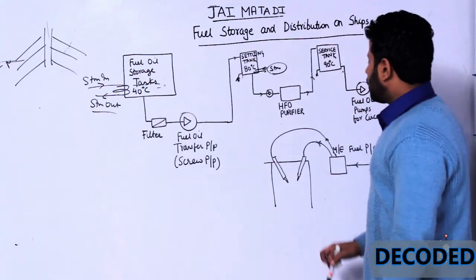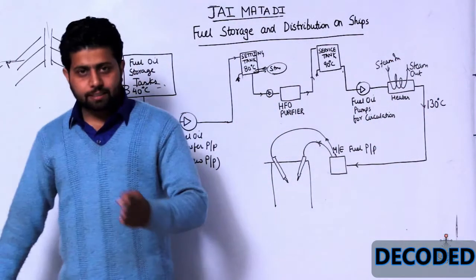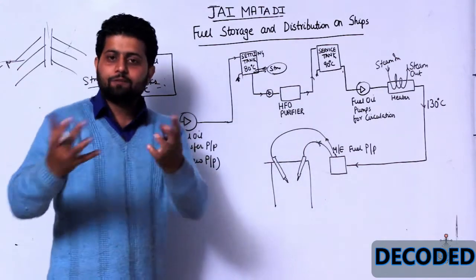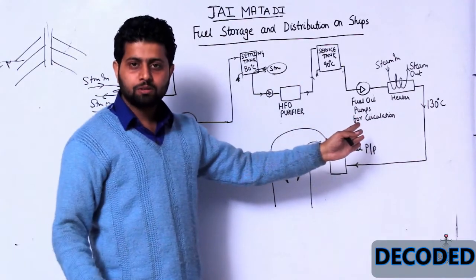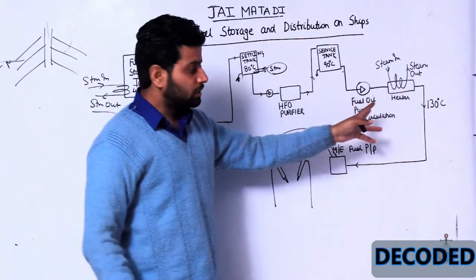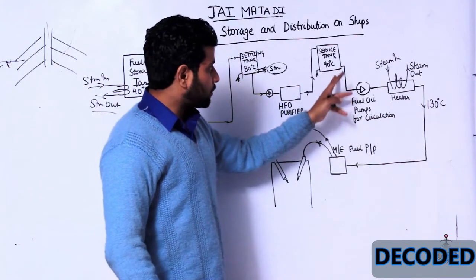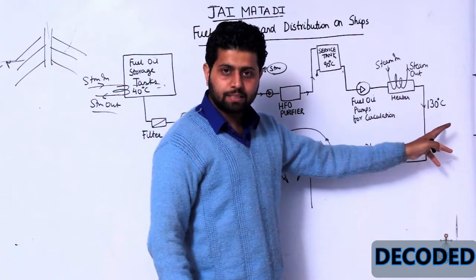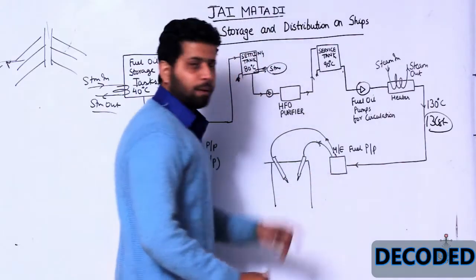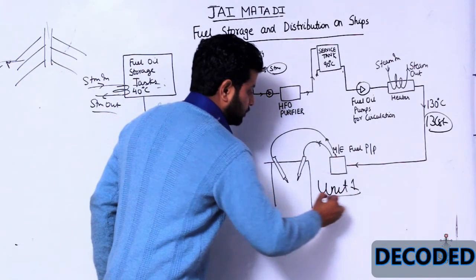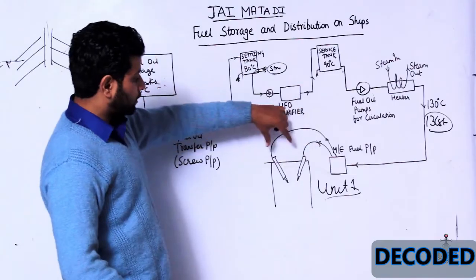In the service tank, the oil is further heated and temperature is increased up to 90 degrees centigrade. The service tank is ready for giving service to the engine. From here, fuel oil booster circulating pumps increase the pressure up to 7 bars and send the oil to a heater where the temperature is increased from 90 degrees centigrade up to 130 degrees centigrade, so that we have 13 cSt viscosity when it reaches the main engine fuel oil pump.